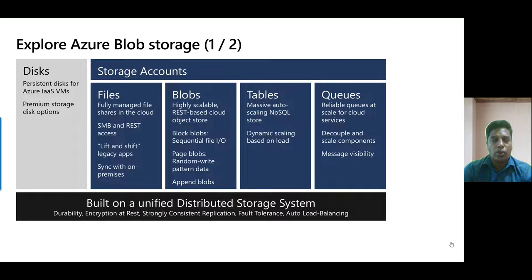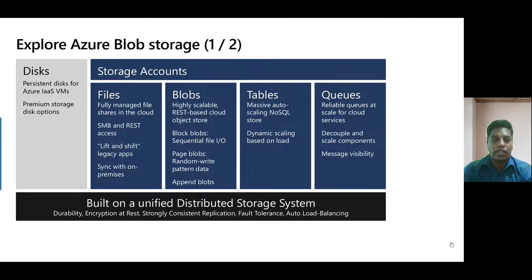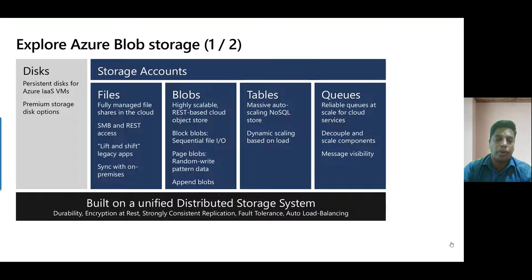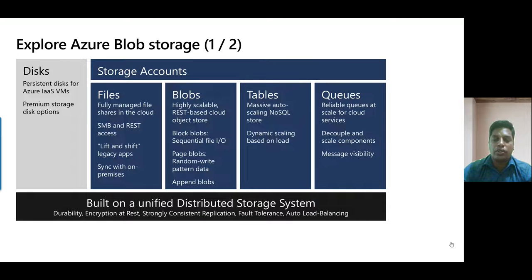We also have three types of blobs: we have page blobs, block blobs, and append blobs. The block blob is typically used for sequential file I/O — most files like audio, video, and images go under this category. The page blob is typically used for virtual machine hard drive VHD files — if you are uploading a virtual machine hard disk image, you use the page blob. The append blob is primarily used as storage for log files; whenever you want to append any content to an existing blob file, you can use the append blob.